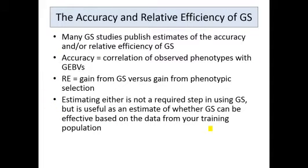So let's start looking at what is the accuracy and relative efficiency of genomic selection. Many studies on genomic selection publish the accuracy and/or the relative efficiency. The accuracy of genomic selection is simply the correlation between observed phenotypic values of lines correlated with their predicted values, or their GEBVs. The relative efficiency looks at the gain you might get from using genomic selection versus the gain you might get from doing phenotypic selection.